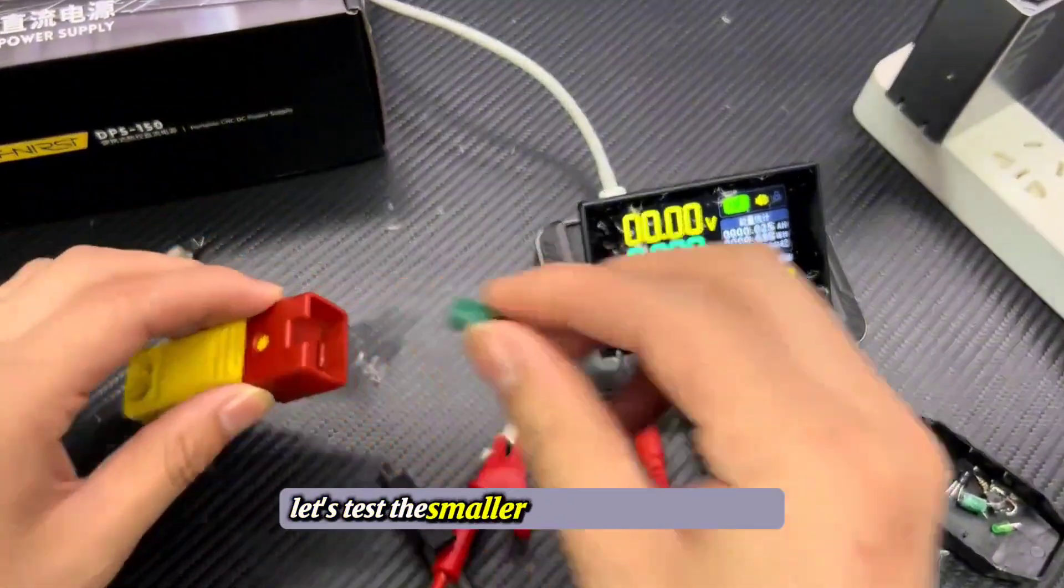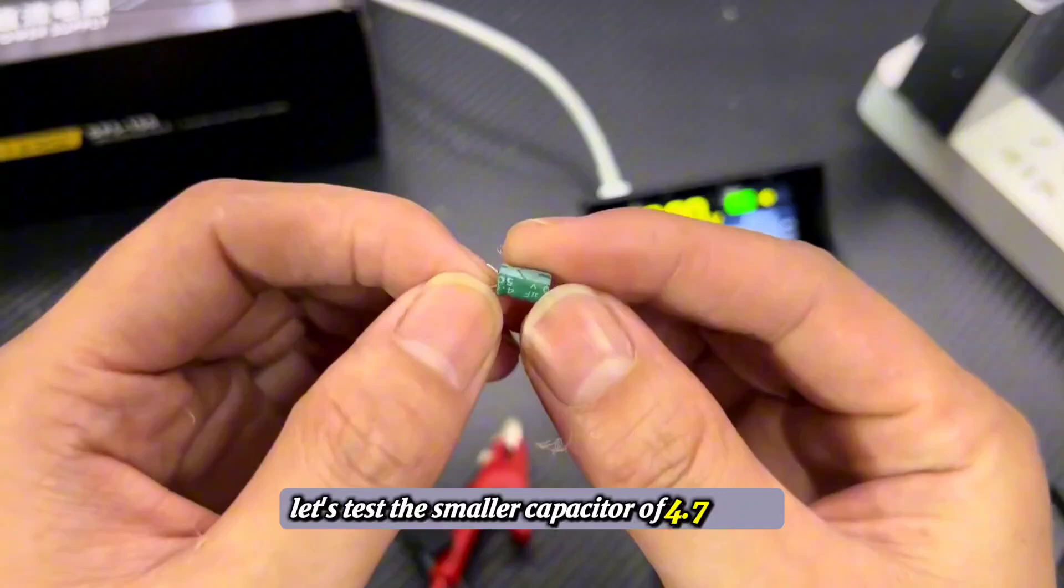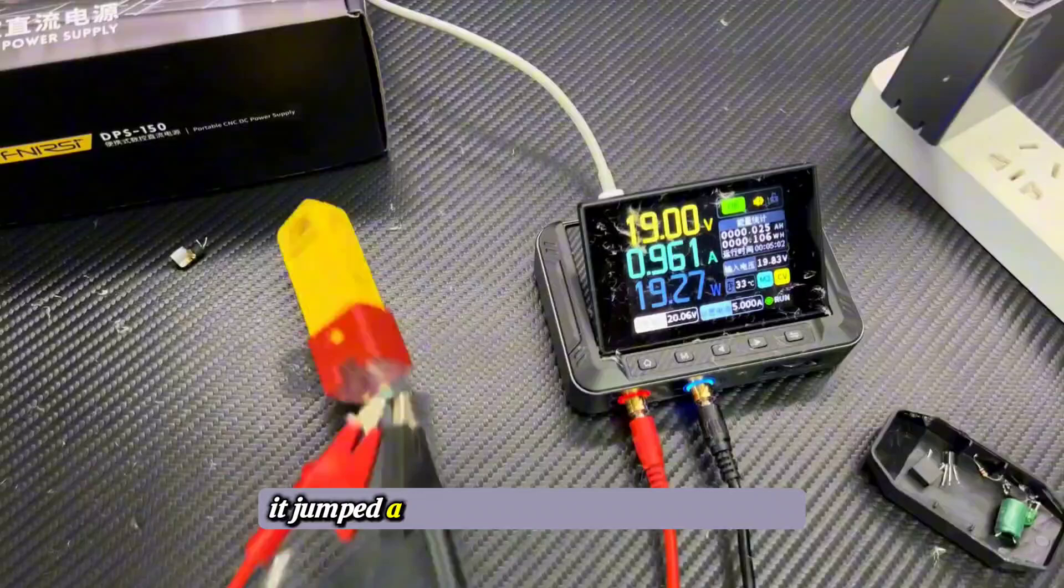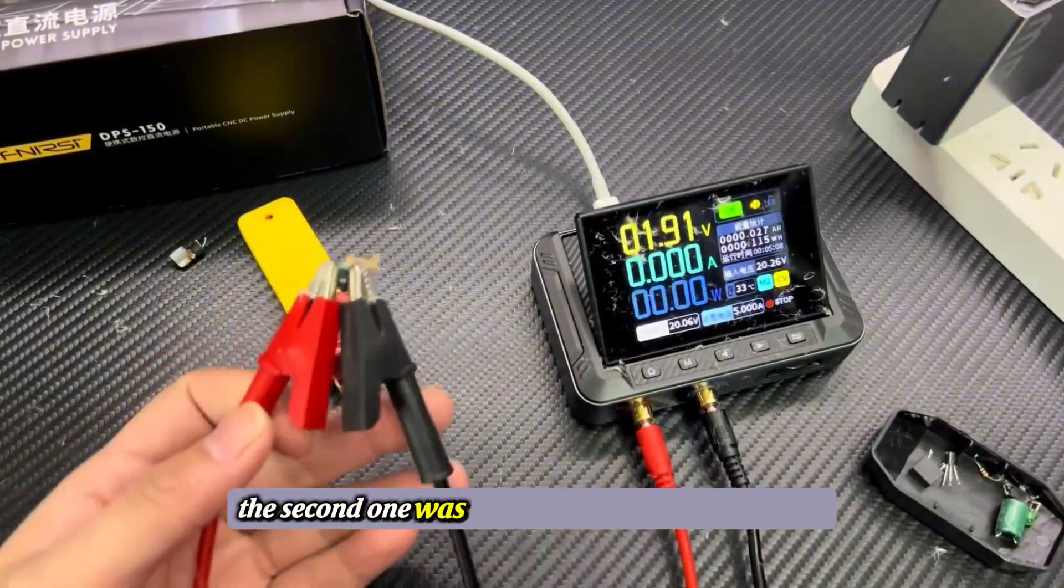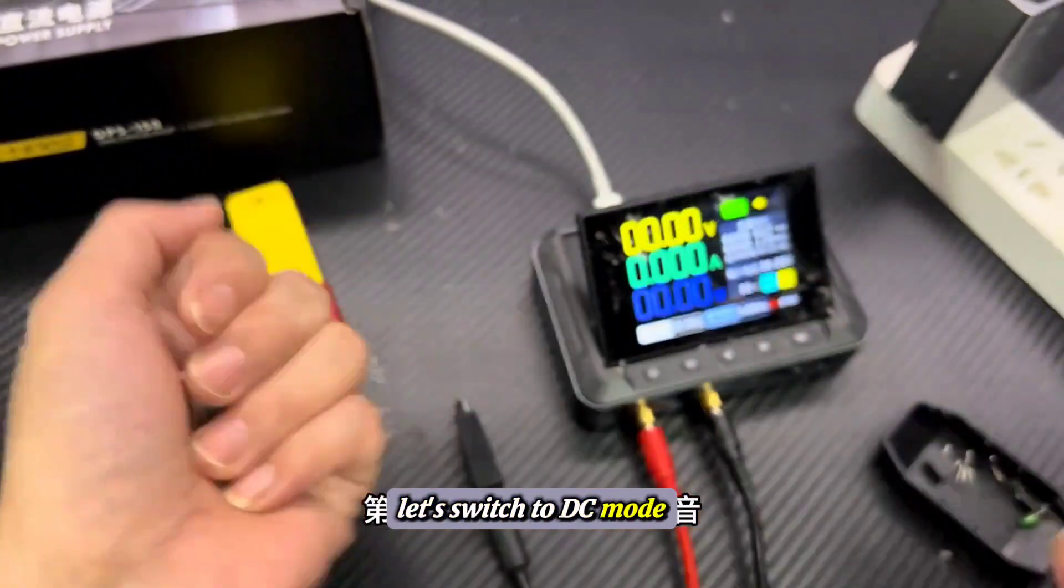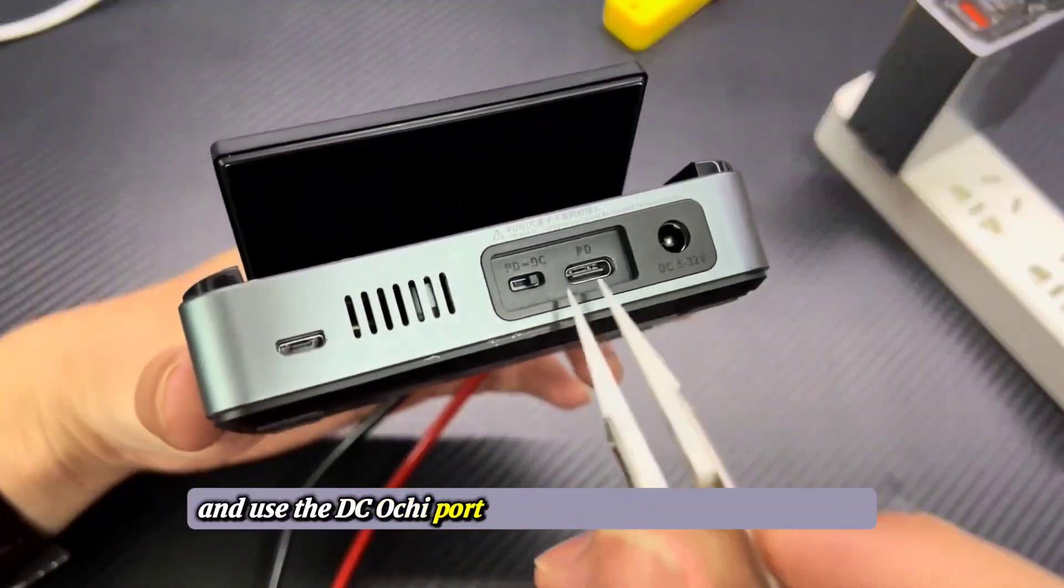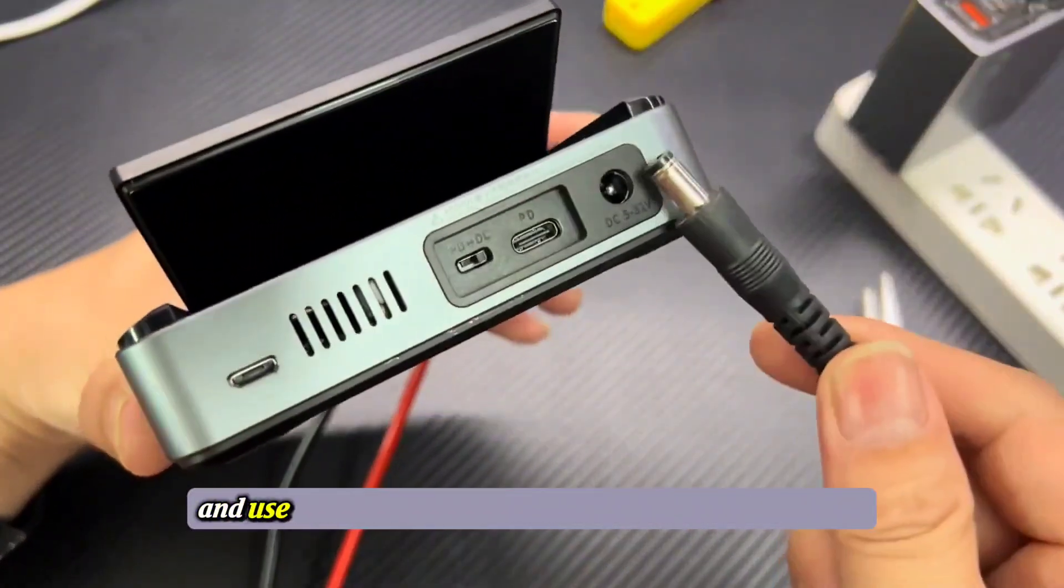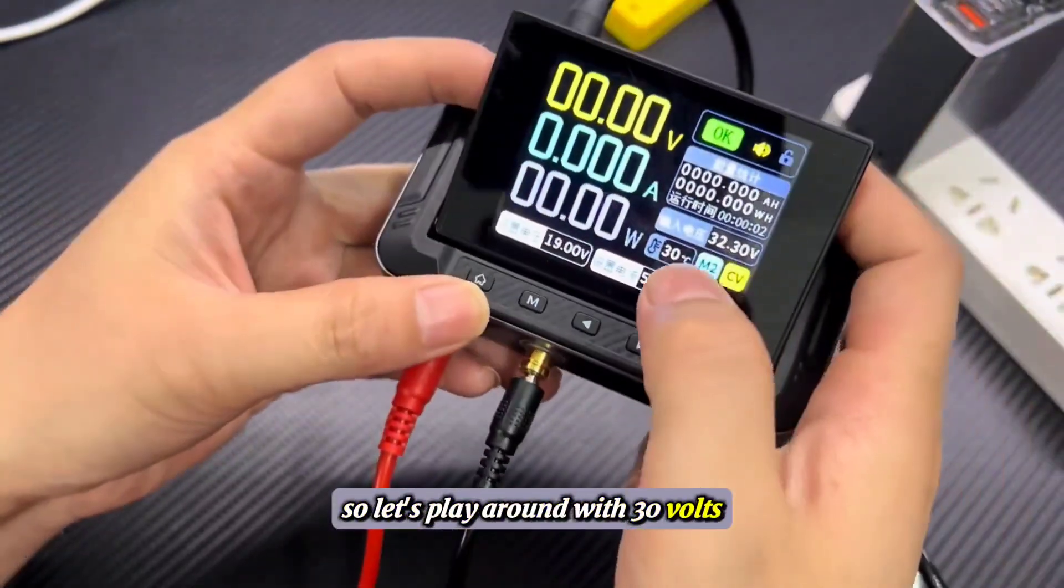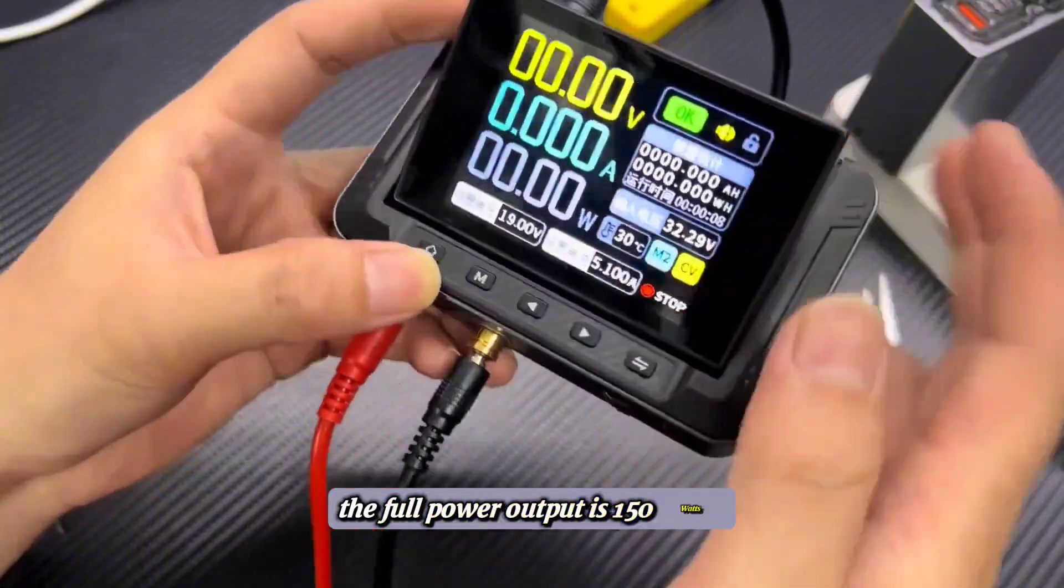Let's test a smaller capacitor of 4.7mm1. It jumped a little, but nothing like the first one. The second one was much quieter. After cleaning up, let's switch to DC mode and use the DC OC port to measure the maximum power. Currently, the input is 32 volts, so let's play around with 30 volts.